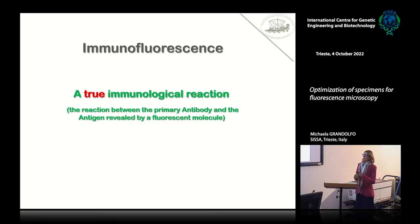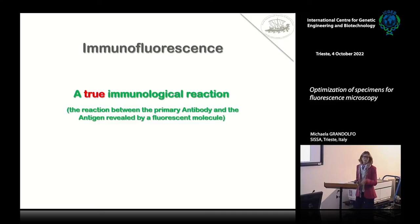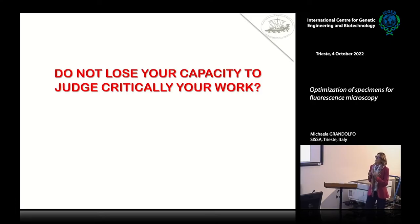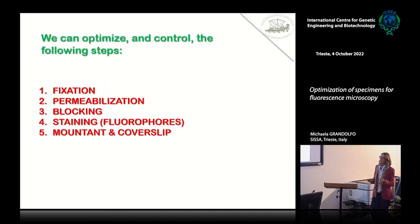There are a lot of different types of specimen that you can manipulate and prepare for fluorescent microscopy and confocal microscopy. We are going to concentrate just on immunofluorescence because we do not have a lot of time and I want you to have lunch in less than an hour. So do not lose your capacity to judge critically your work — this is really, really important. What can we do to work properly with our sample?